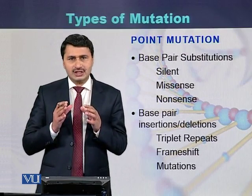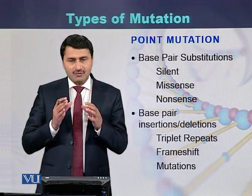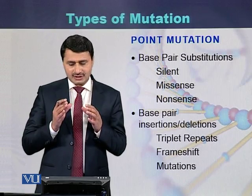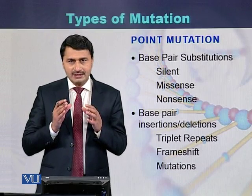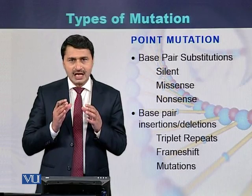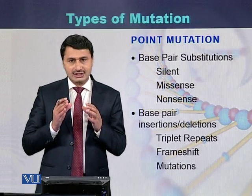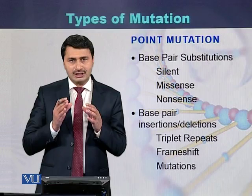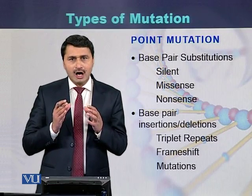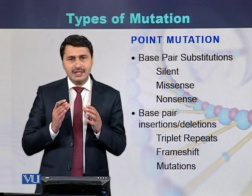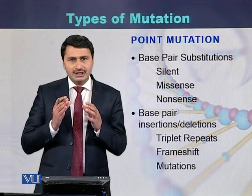Point mutations can be of two major types. The first is base pair substitutions, which can be silent, missense, and nonsense. The second type involves base pair insertions or deletions, which can be in the form of repeats, deletions, or insertions.